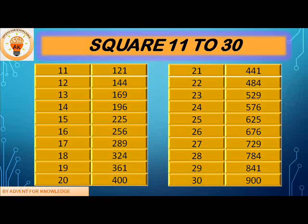20 square is 400. Let's repeat the above: 11 square is 121, 12 square is 144, 13 square is 169, 14 square is 196, 15 square is 225, 16 square is 256, 17 square is 289, 18 square is 324, 19 square is 361, 20 square is 400. Now let's begin from 21 up to 30.